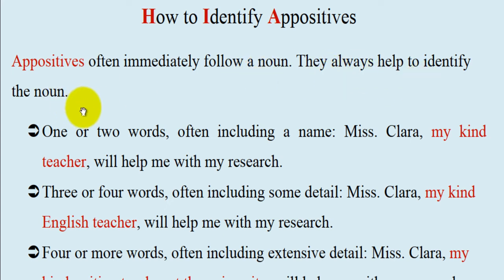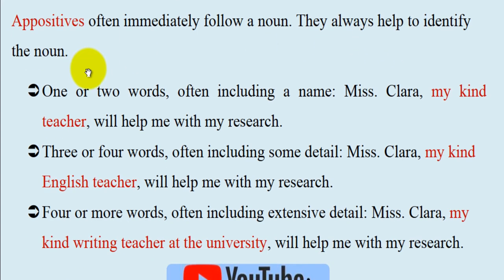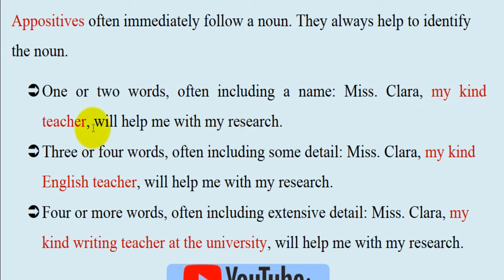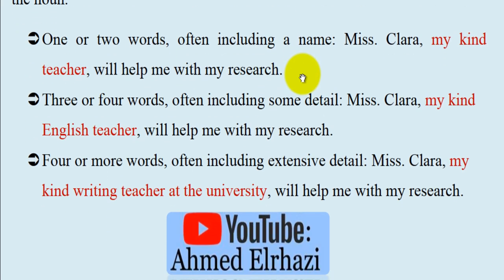How to identify appositives: Appositives often immediately follow a noun and always help to identify it. One or two words, often including a name. For example: 'Miss Clara, my kind teacher, will help me with my research.' Here, 'my kind teacher' is one or two words identifying the noun.